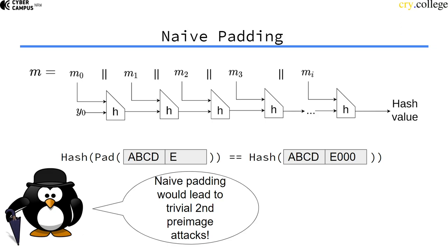Unfortunately, this would lead to a trivial second preimage attack. For example, if we have a hash value that works on blocks of size four bytes and we want to hash the message "a b c d e", with naive padding this would be filled with zero bytes and then hashed.